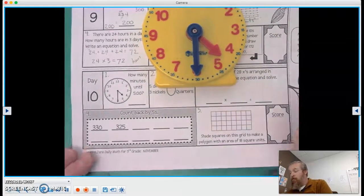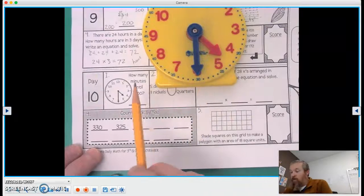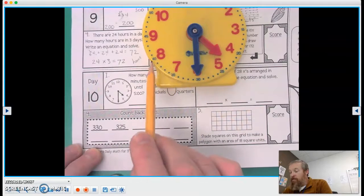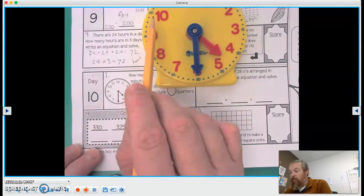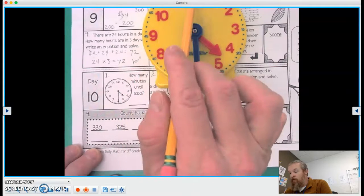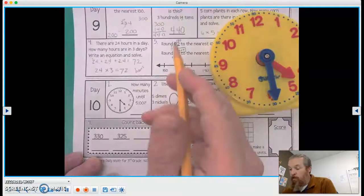So as we're going through, we can go ahead and count. 5, 10, 15, 20, 25, 30. 30 minutes.